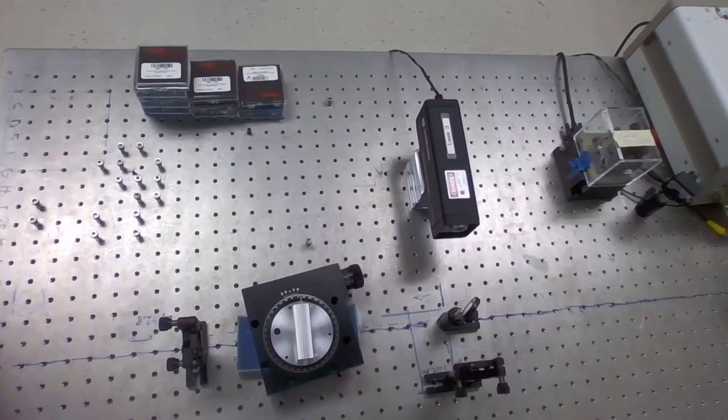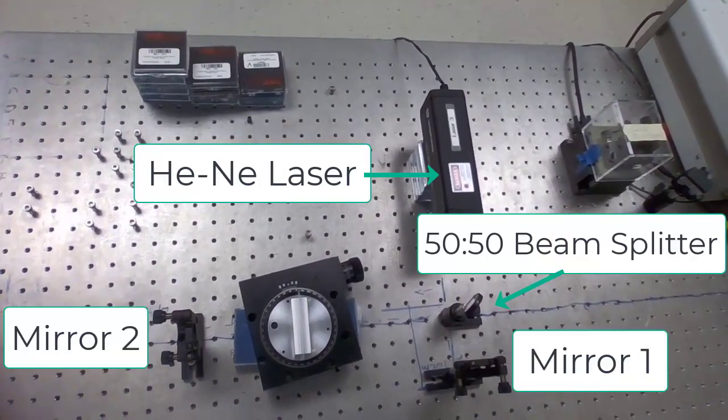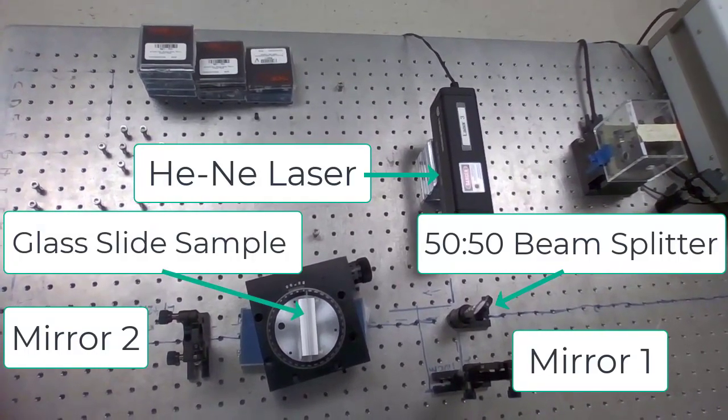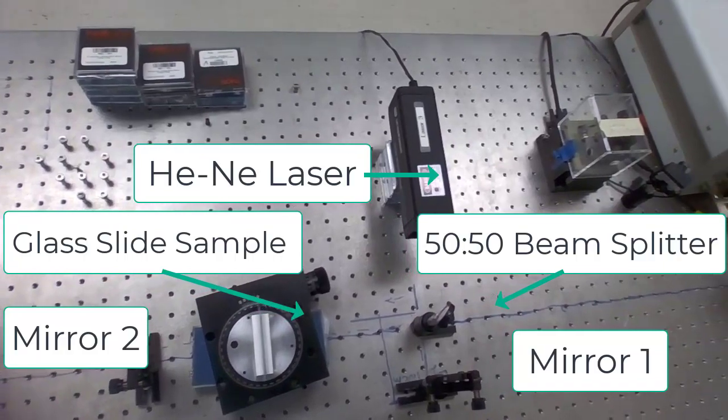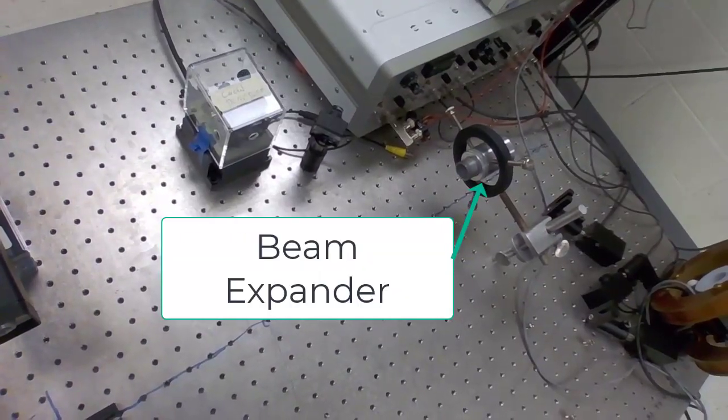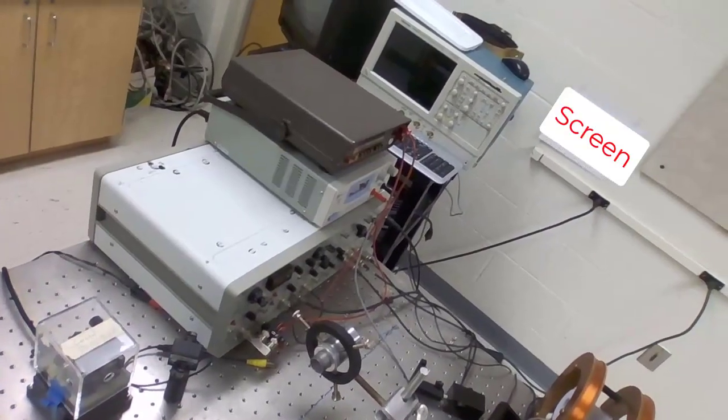The interferometer is set up here with a helium neon laser, a beam splitter, and two mirrors. And in the long path length is a glass slide on a rotating pedestal. When the beams recombine, they go down to a beam spreader and from there, the spread out beam goes to a screen on the wall where we will be able to observe the fringes.